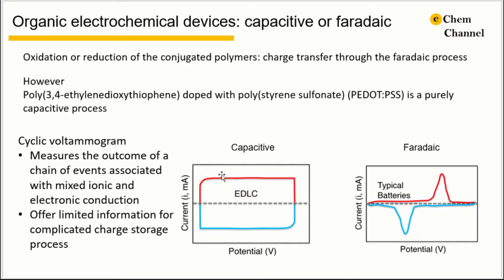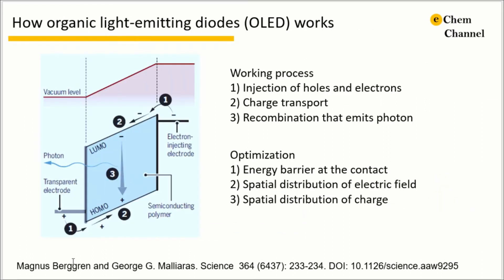A rectangular-shaped CV indicates a capacitive process, and if there is a pair of peaks with large separations observed on the cathodic and anodic scan of the CV curve, it indicates a faradaic process. However, the CV method measures the overall results of a series of events, including semiconductor-conductor transition, morphology changes, localized states, and multiple doping mechanisms. So for a complicated charge storage process, it offers limited information.